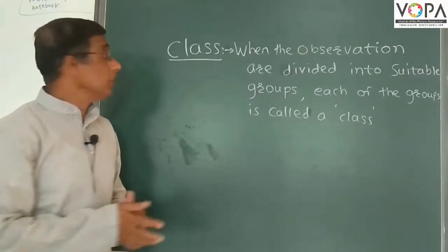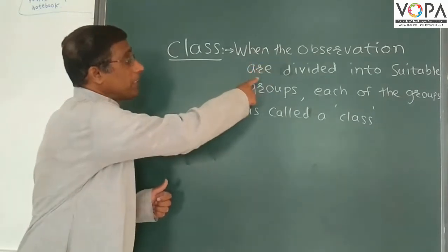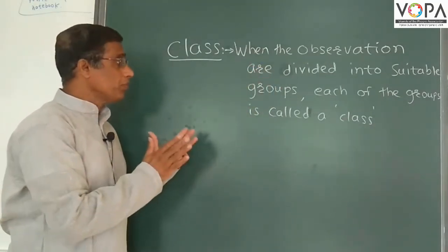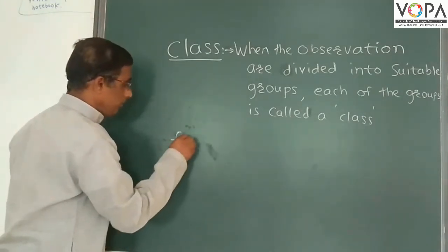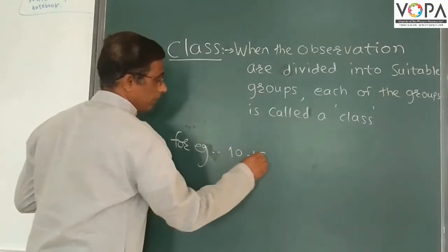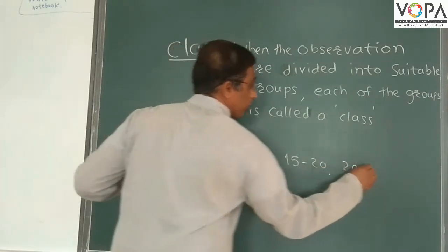Now we take some definitions. First we take class. What is class? When the observations are divided into suitable groups, each of the groups is called class. Means for example, 10 to 15, 15 to 20, 20 to 25.